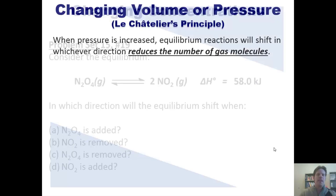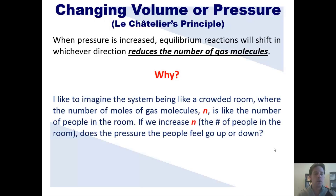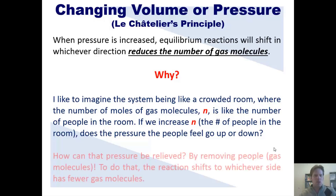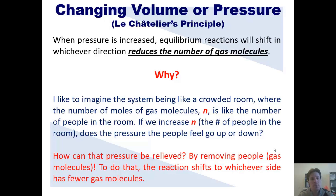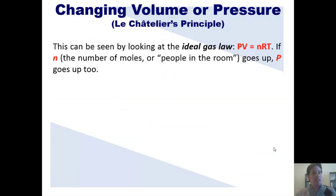Let's see how Le Chatelier's principle applies to settings in which we change volume or pressures. Remember that when pressure is increased, equilibrium reactions will shift in whichever direction reduces the number of gas molecules. I like to imagine a system being like a crowded room, where the number of moles of gas molecules, N, is like the number of people in the room. If we increase N, the number of people in the room, the pressure they feel goes up — everyone feels more crowded. So how do you relieve that pressure? By removing people, or gas molecules. You have to shift your reaction in whichever direction gives you fewer gas molecules.